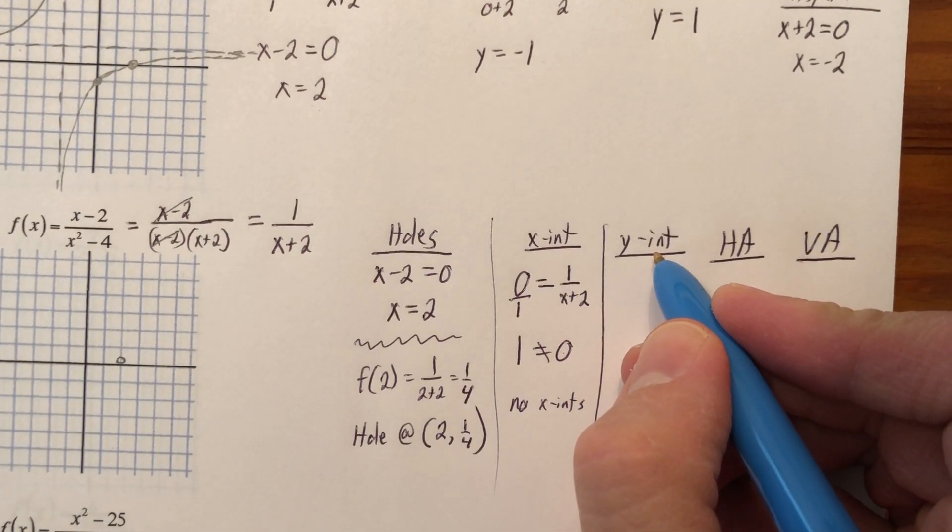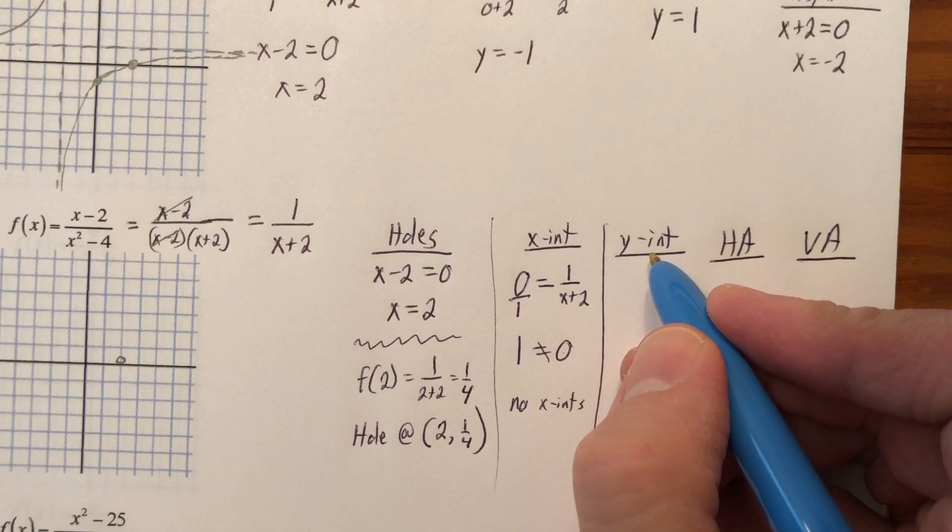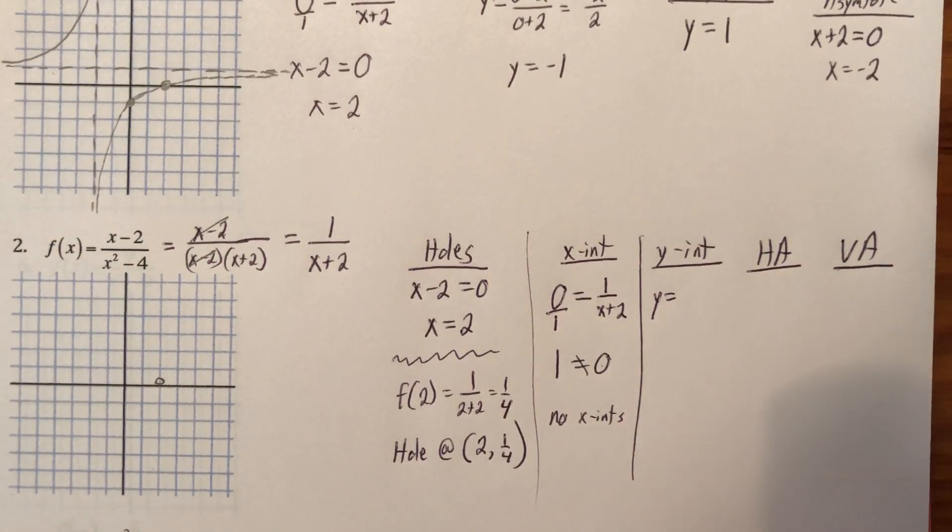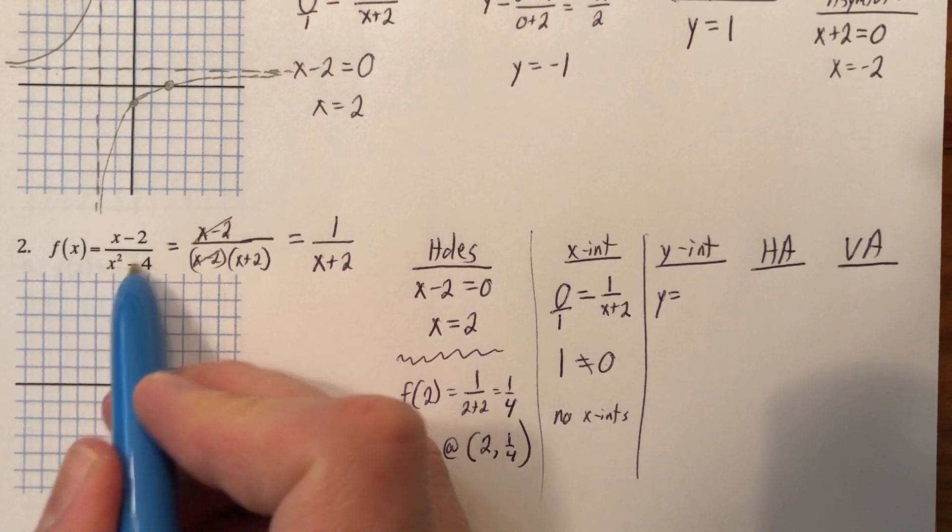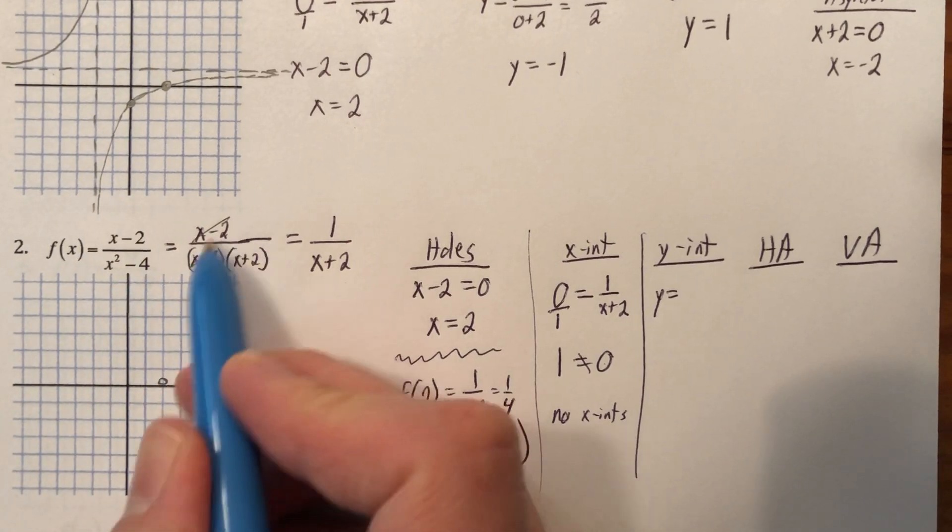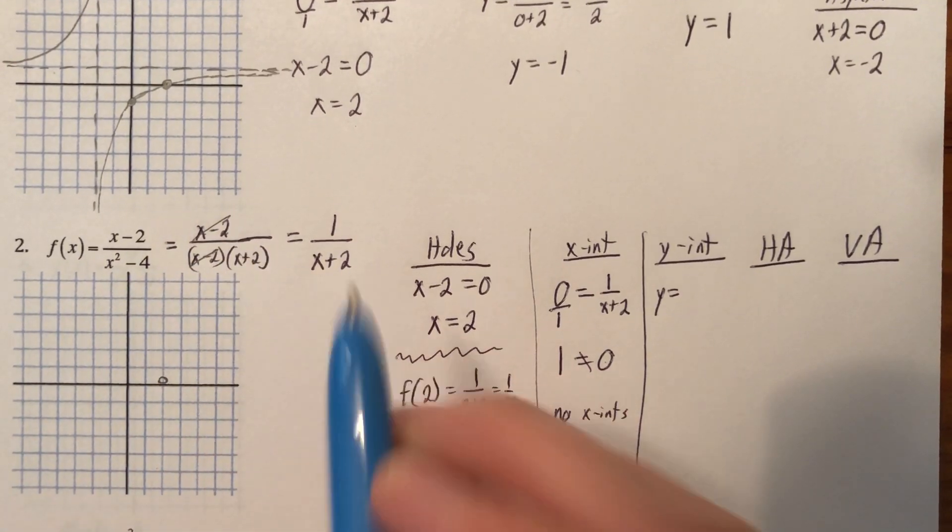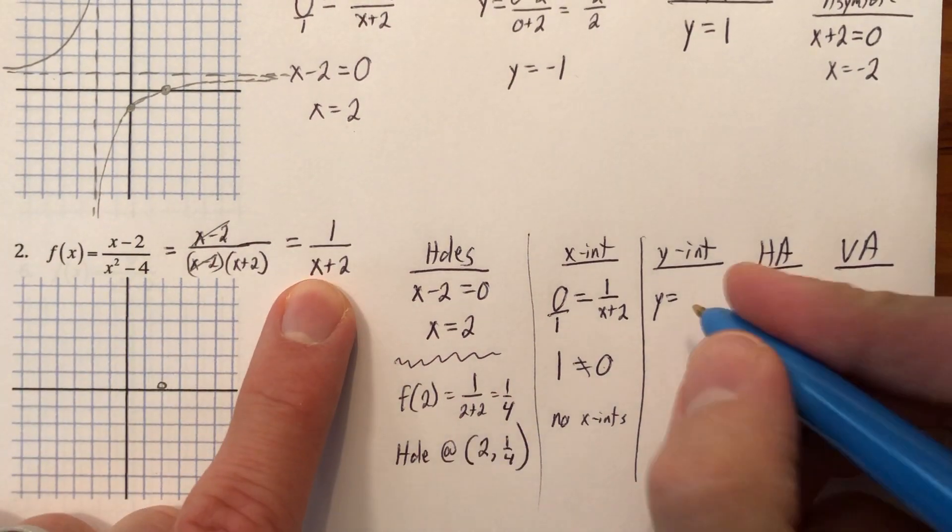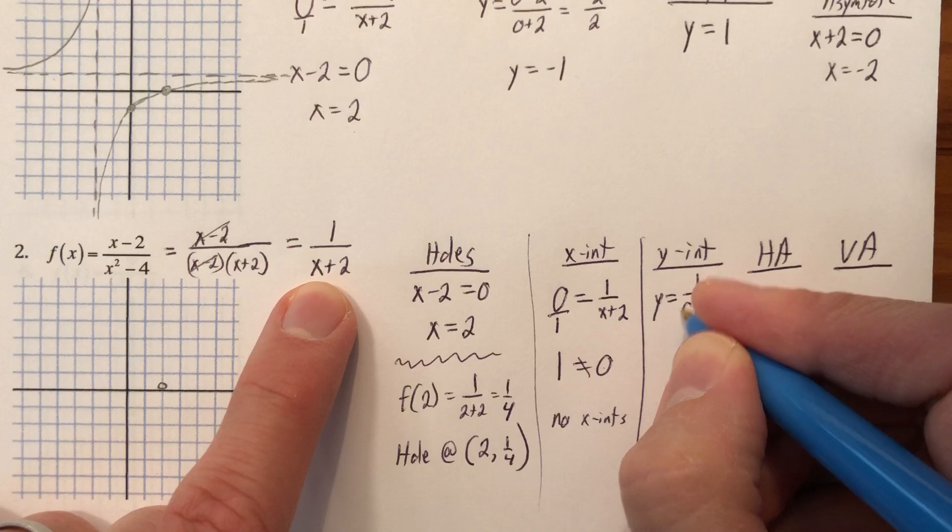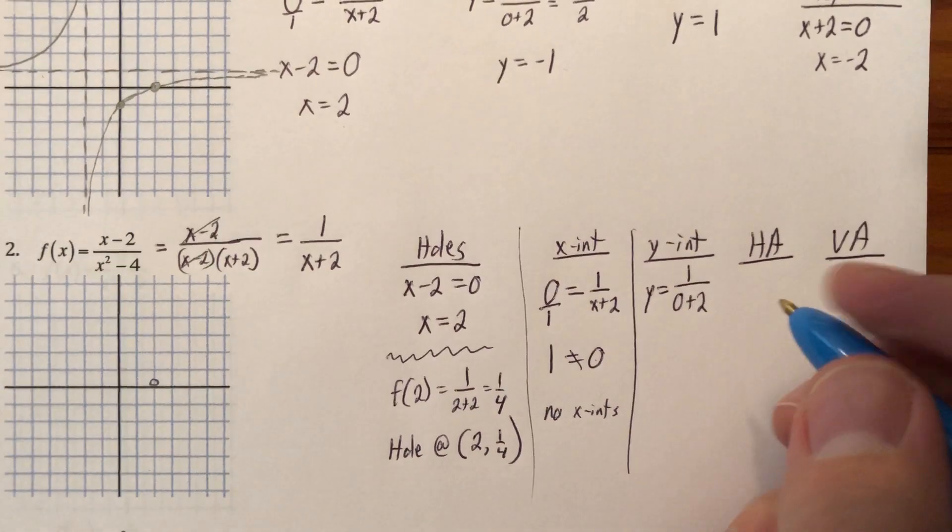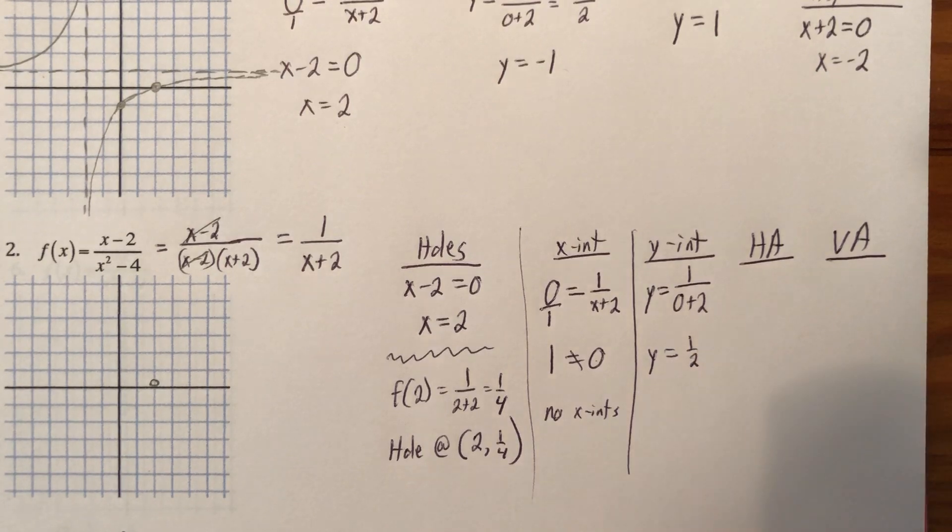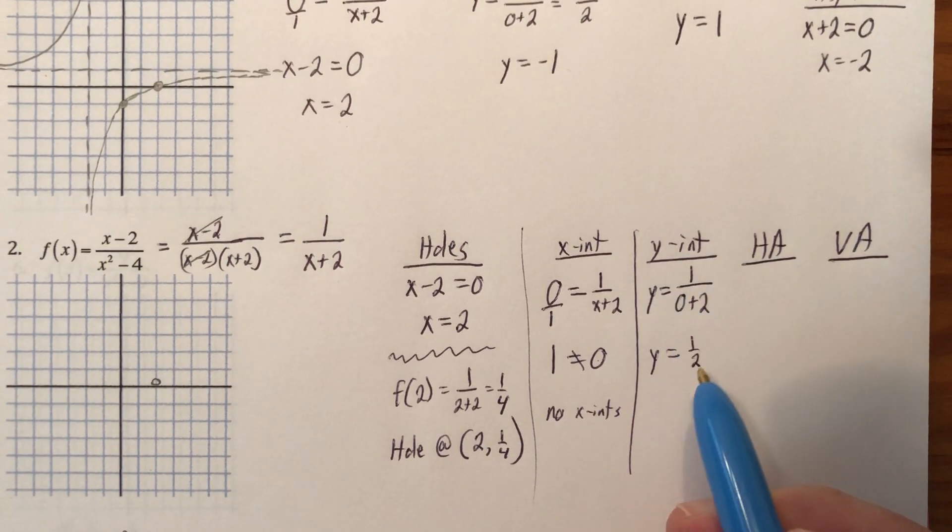All right, y-intercept is where x equals 0. So here's the deal. This is y. Tell me why. Sorry, I couldn't resist. So y equals, don't use this. You fixed it and made it look like this. So here it is. f of x equals that. 1 over 0 plus 2. Well, that looks like 1 over 2. So 1 half.